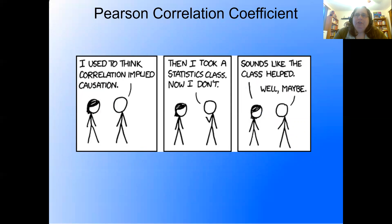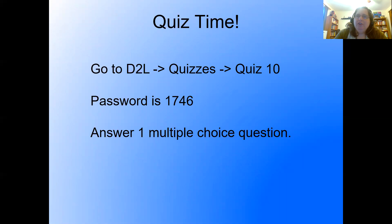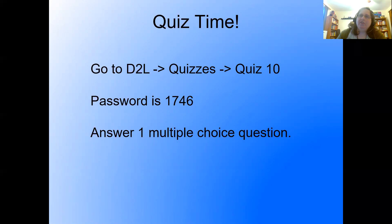Pearson correlation coefficient — I used to think correlation implied causation, then I took a statistics class, and now I don't. Sounds like the class helped! Please go to D2L, go to quizzes, go to quiz 10. The password is 1746 — answer one multiple choice question for this quiz. That's all I have for you this time. Please stay safe, be well, and I'll talk to you again soon.